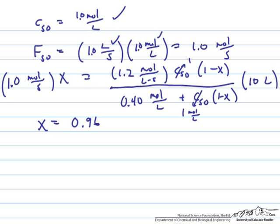We have 1.0 moles per second, Fs0 times our unknown x is equal to this 1.2 for the Vmax that we determined. Cs0 is equal to 1 mole per liter times 1 minus x divided by the Michaelis constant of 0.4 plus Cs0 times 1 minus x, and then we have to multiply all that by the volume, which is 10 liters. When I do all the algebra to solve for x, I get an x of 96%, so pretty high conversion inside this reactor.